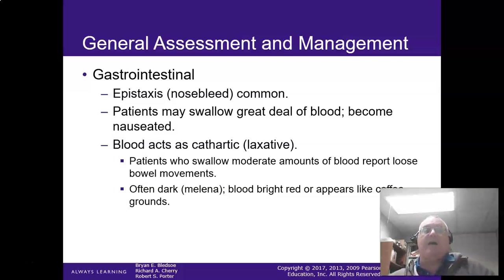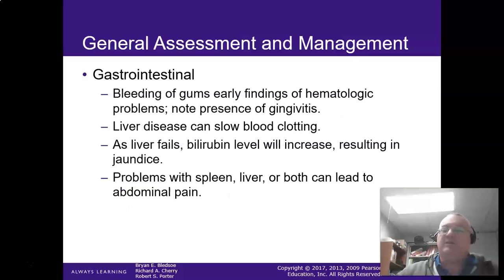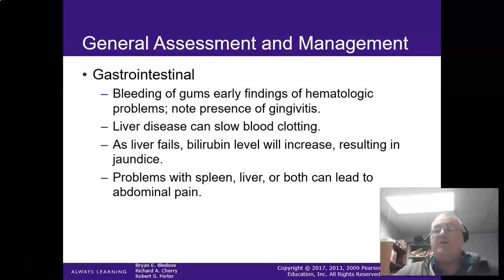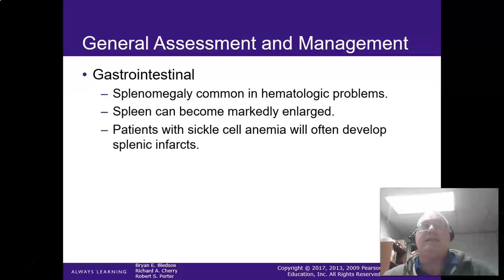In the GI tract, if you've got GI bleeding, be aware: blood in the GI tract actually forms a laxative effect — it wants to get rid of it, so they're going to have diarrhea. Epistaxis is a common emergency. Lean them forward, and if there's no trauma to the area, be thinking that their blood pressure is high until proven otherwise. Liver disease causes slow blood clotting, and if the liver fails, you'll get increased jaundice and continued problems with slow blood clotting. Remember, clotting has to happen within the body; otherwise you're going to get free bleeding everywhere.